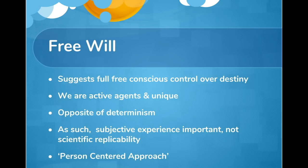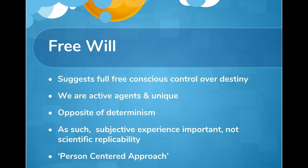The first concept in the humanistic approach is free will, which follows on from that focus on the individual. If you're looking at the individual as really important, then you need to believe in free will - that the individual has control over their own destiny. Terms such as active agents are used in the humanistic approach. They believe that any individual is an active agent in their own environment and their own life, meaning you have control over what you do, the effort you put into things, where you take your life. They see individuals as unique - no two people are the same - and we can all react to the same stimulus in different ways.